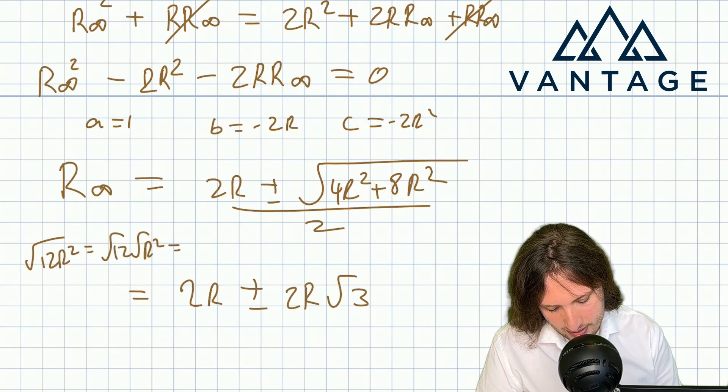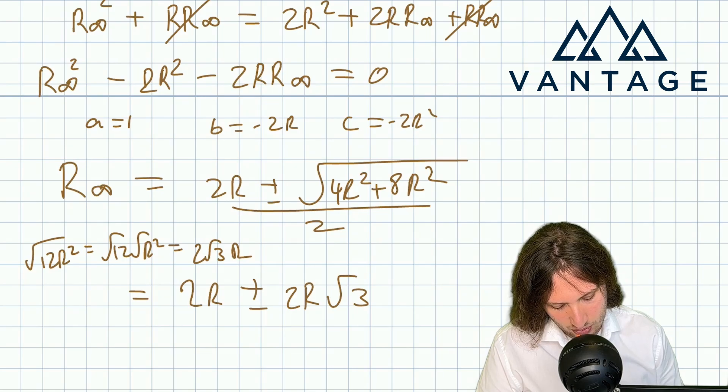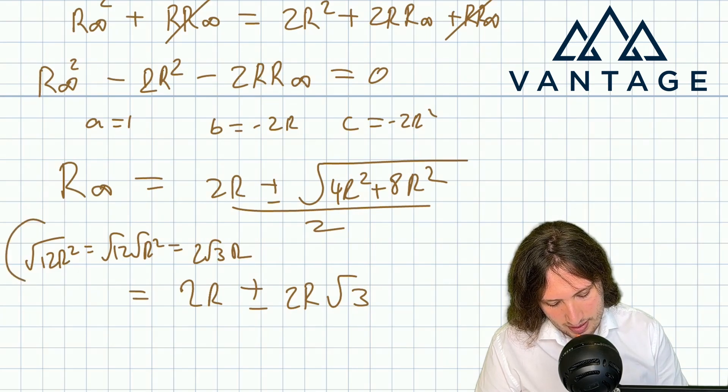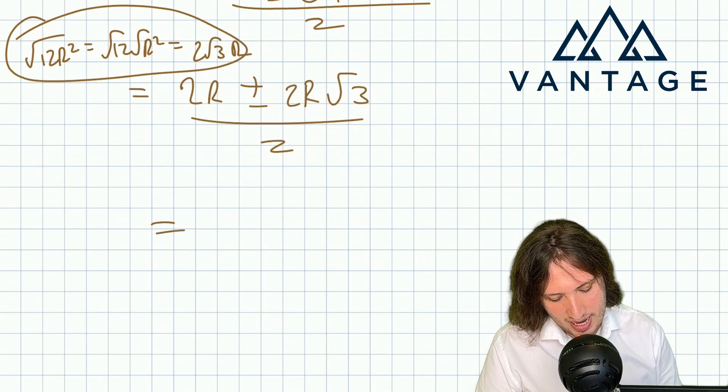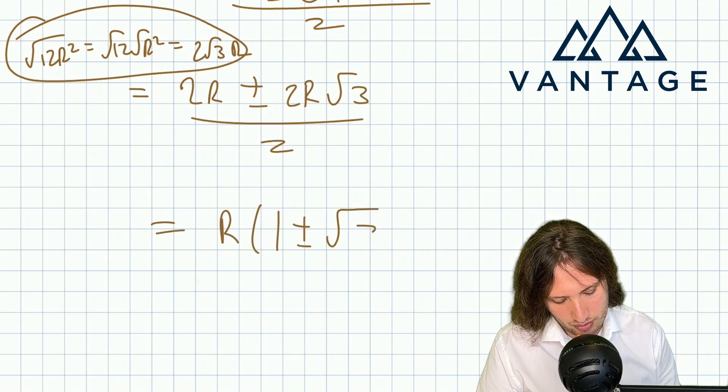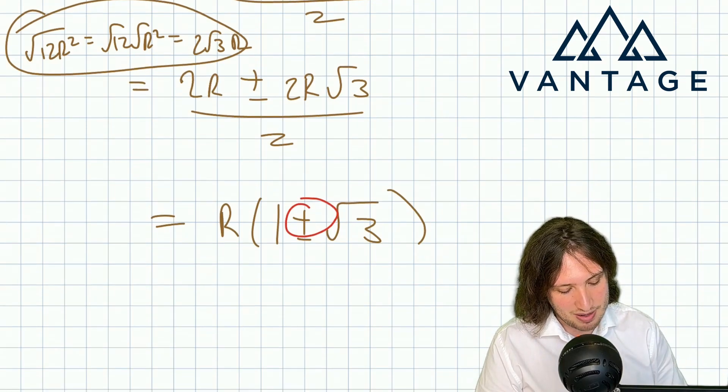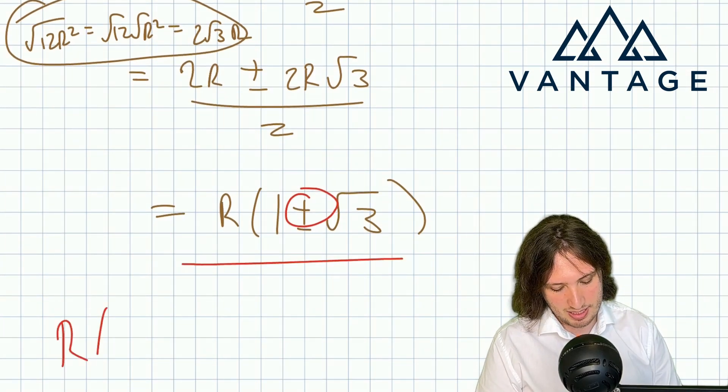Because square root 12R squared is root 12 root R squared, which is 2 root 3 R. So I've got my 2R and my root 3, and then that over 2. So we simply get, there are lots of, 1 plus or minus root 3, but it must be the plus choice because the resistance has to be positive. And so there's our answer: it's the resistance of each resistor times 1 plus root 3.